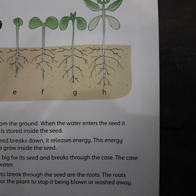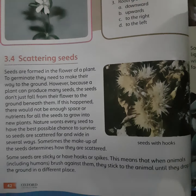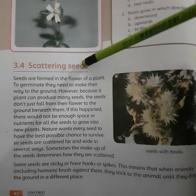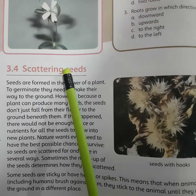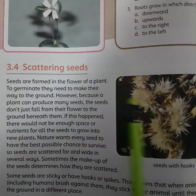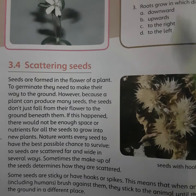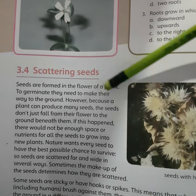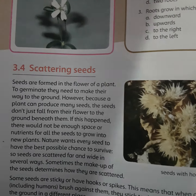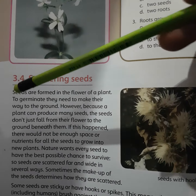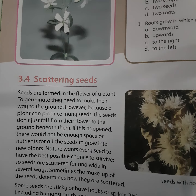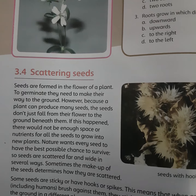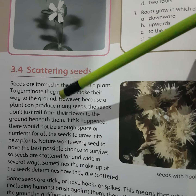Now open your book, page number 42. Here we will read: Scattering Seeds. Seeds are formed in the flower of a plant. For seeds to germinate, they need to make their way to the ground. This is part of the germination process — a plant can produce many seeds.